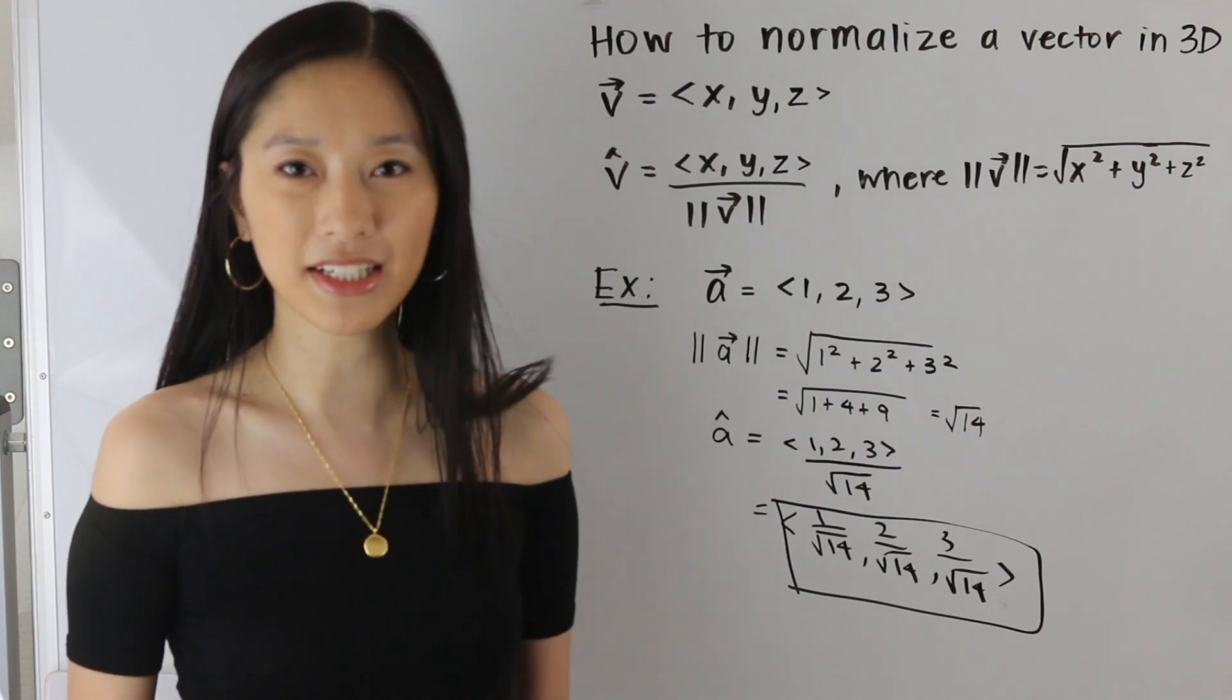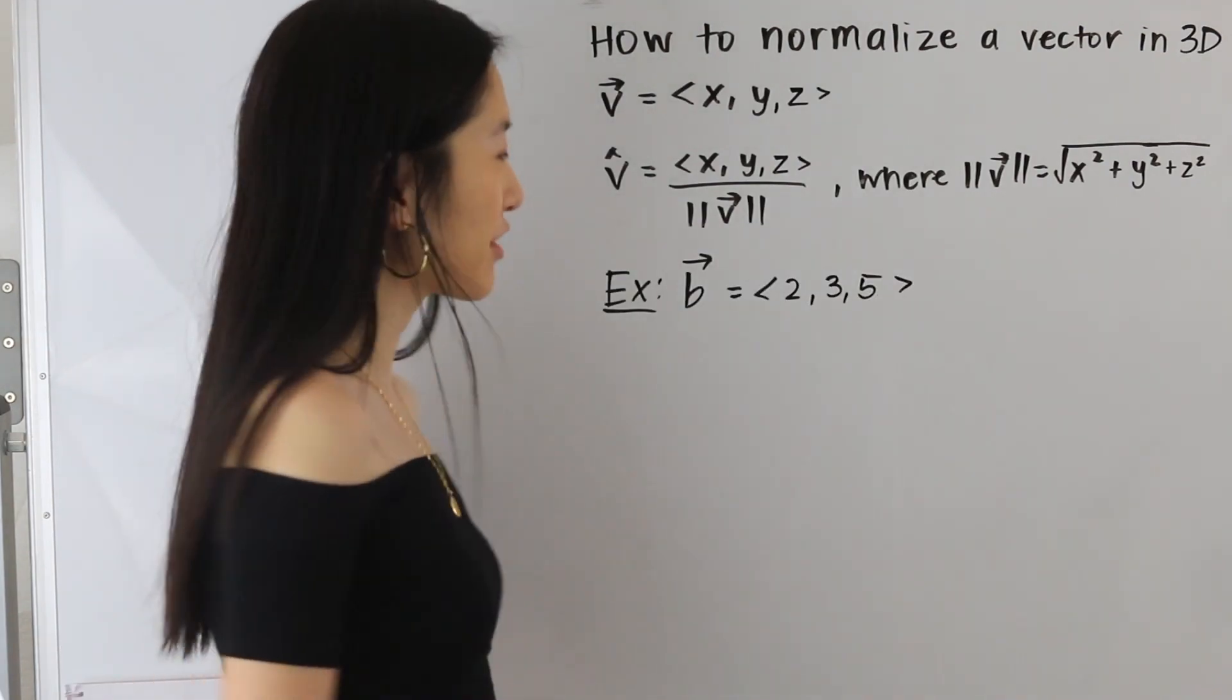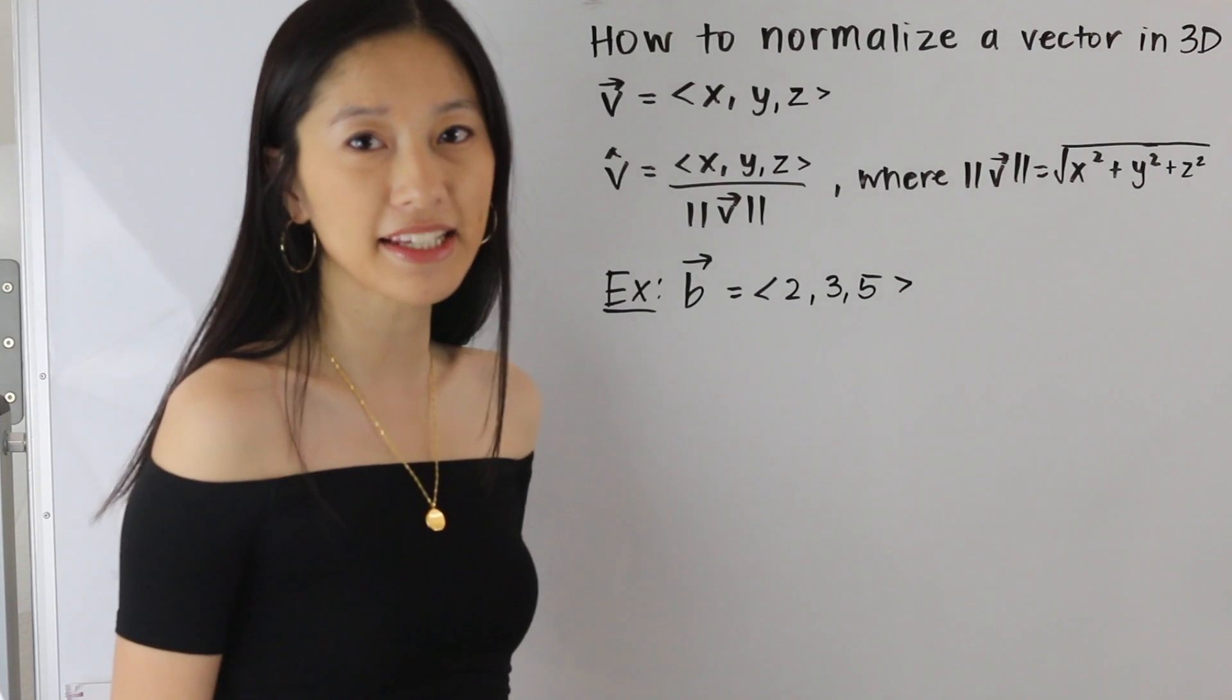And so let's go ahead and take a look at one more example. In this next example here we have the vector 2, 3, 5. And so let's start off by taking its magnitude.